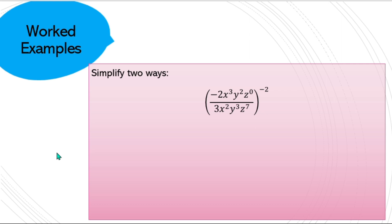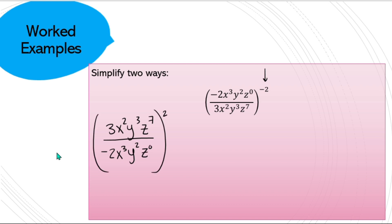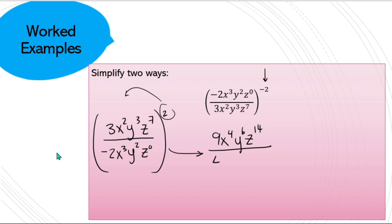For my second way, I'll deal with the negative exponent first by inverting the entire fraction. So 3x²y³z⁷ is now in the numerator, and negative 2x³y²z⁰ is in the denominator, with everything squared. I'll distribute that 2 to everything in the fraction to get 9x⁴y⁶z¹⁴ on top. On the bottom: squaring makes 4x⁶y⁴. Since z⁰ squared is z⁰ = 1, I drop the z.